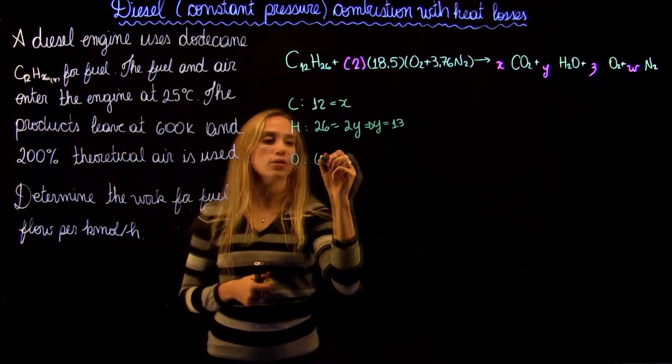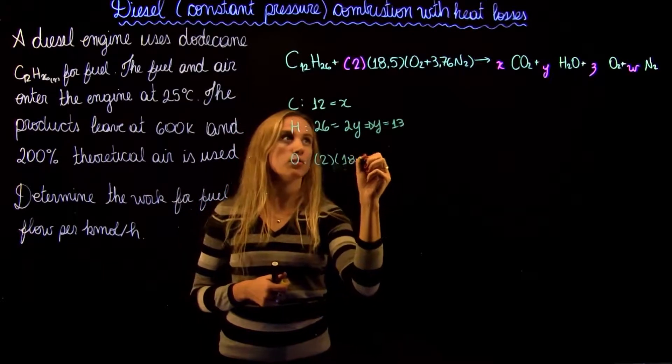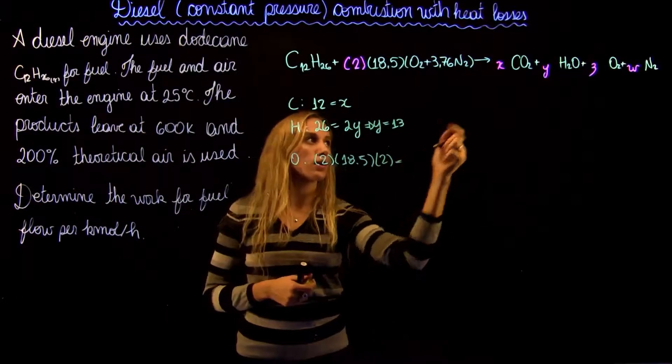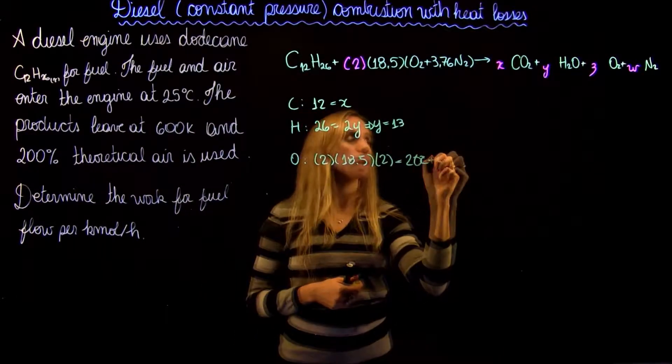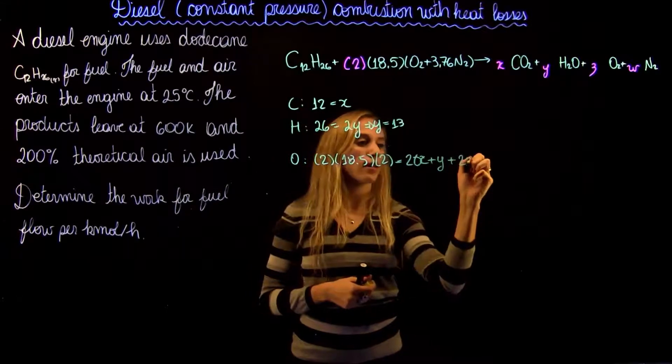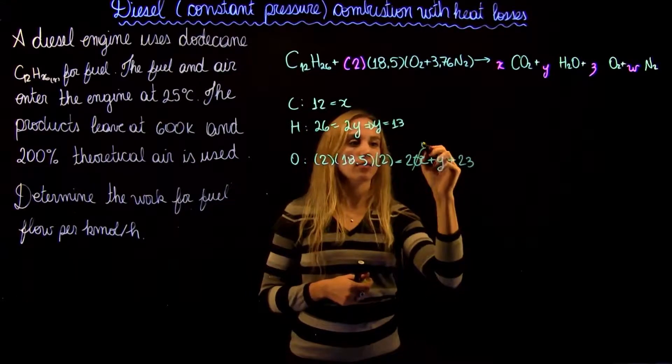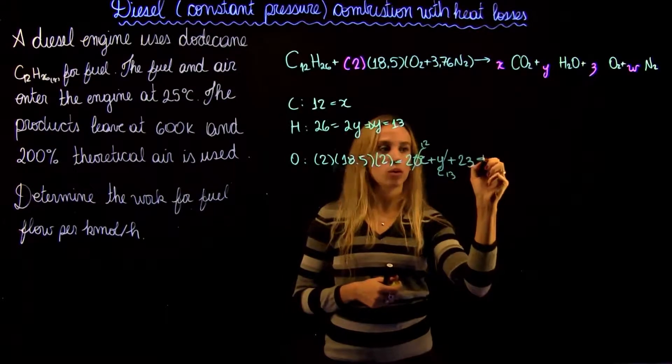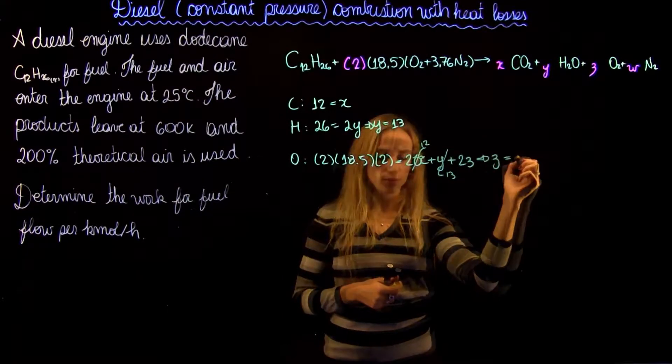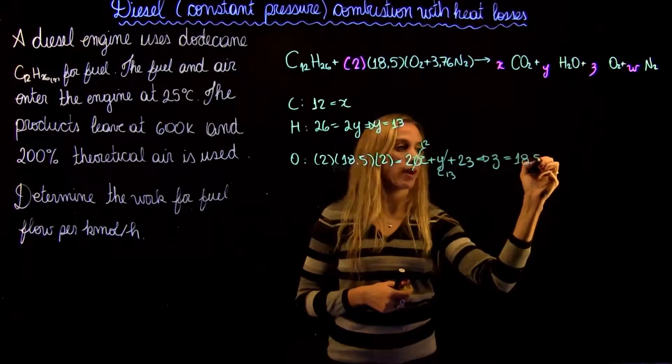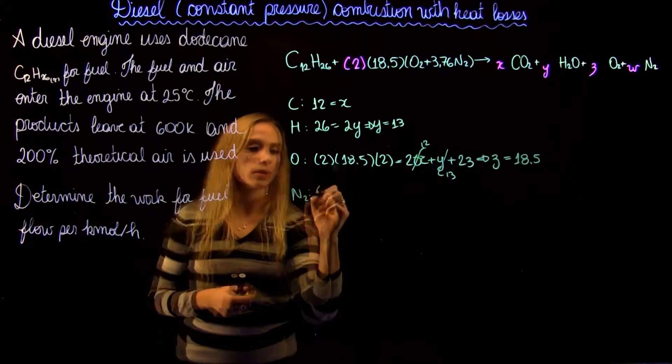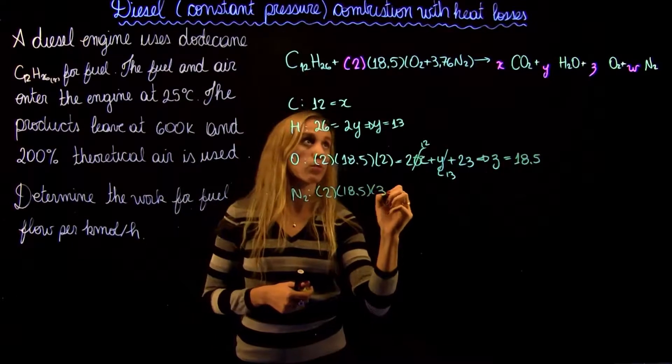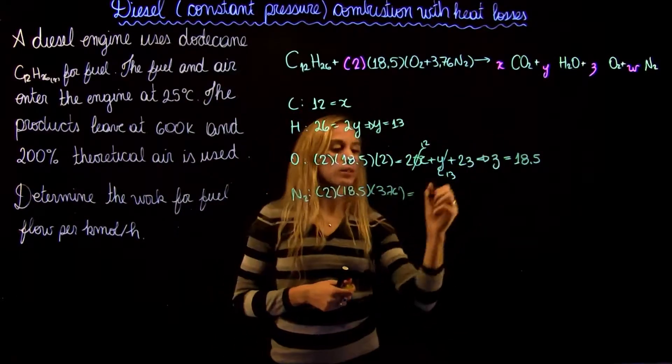And then for oxygen, we're going to have 2 times 18.5 times 2 from the oxygen equals 2x plus y plus 2z. x we found is 12, y we found is 13, and we're going to find the value of z of 18.5. And now for nitrogen,